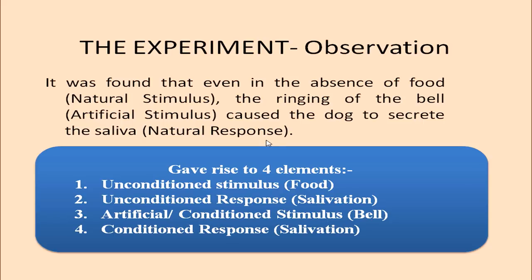There were four elements Pavlov identified. He called the food the unconditioned stimulus, the response to it — the saliva of the dog — was the unconditioned response, the bell that was rung was called the artificial or conditioned stimulus, and the saliva produced upon hearing the bell alone was the conditioned response, because the dog was salivating even before the food was served.